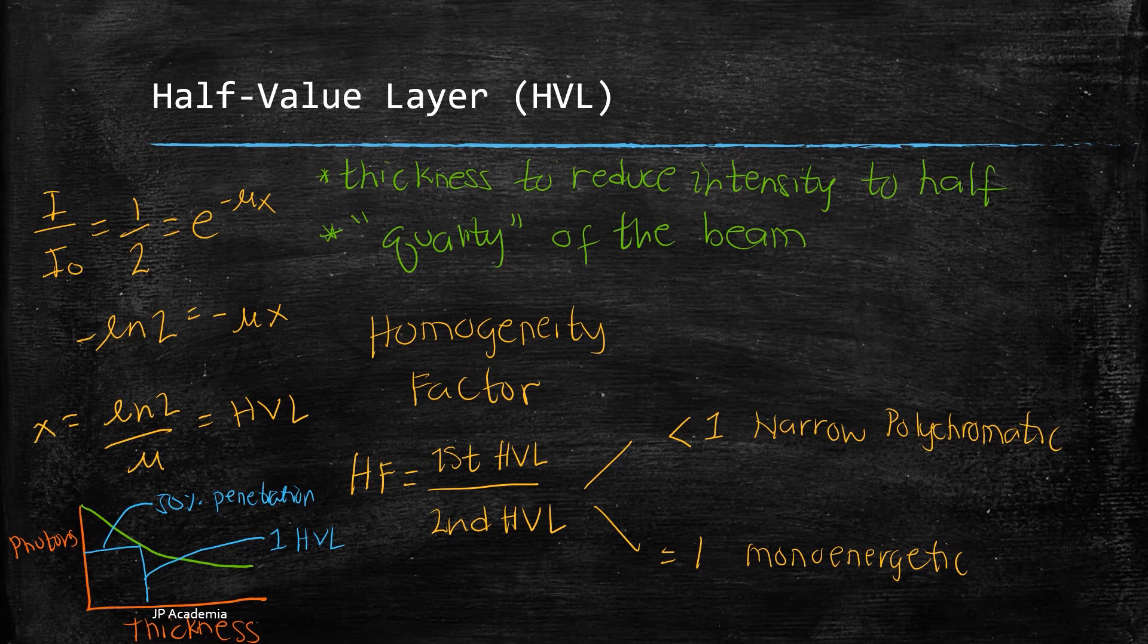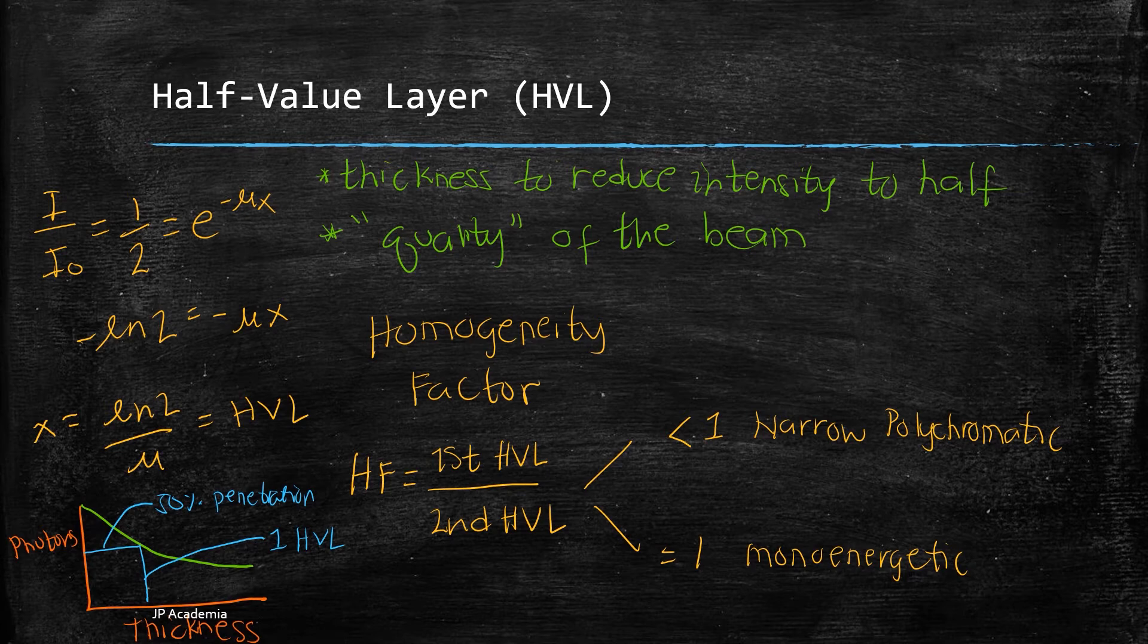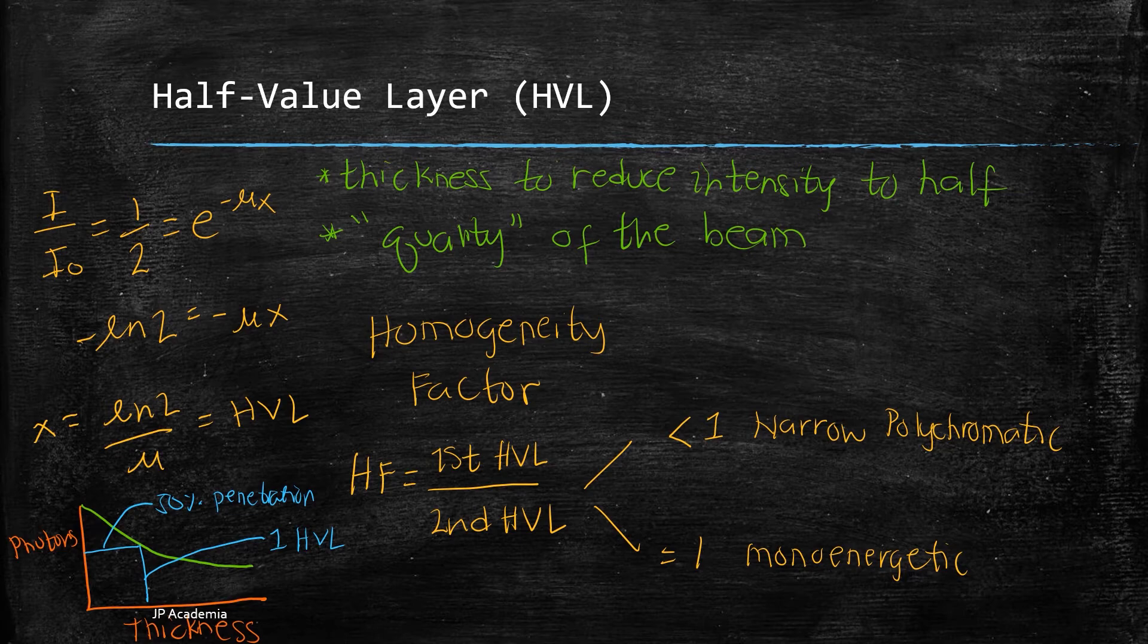We also define here the homogeneity factor or the HF shown here which describes the polychromatic nature of beam. This is always less than one for a narrow polychromatic beam due to beam hardening or this is the removal of the lower energetic photons while it is equal to one for mono energetic beam.